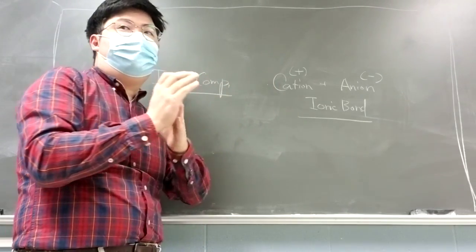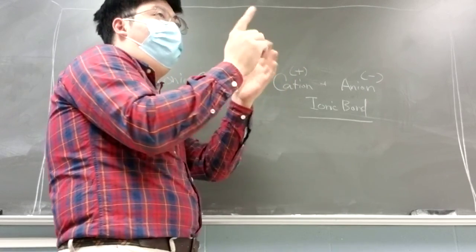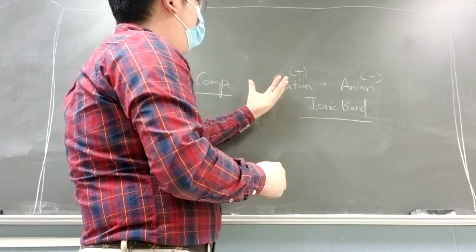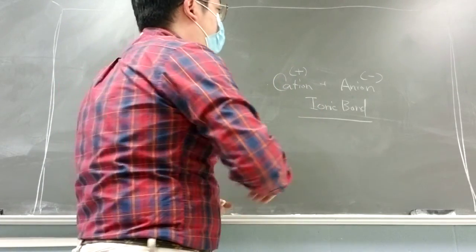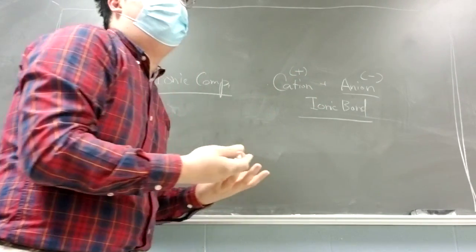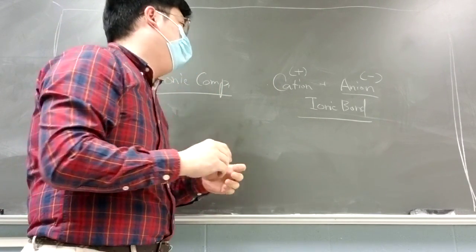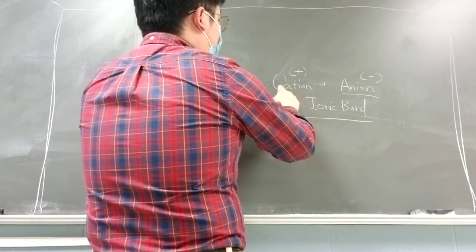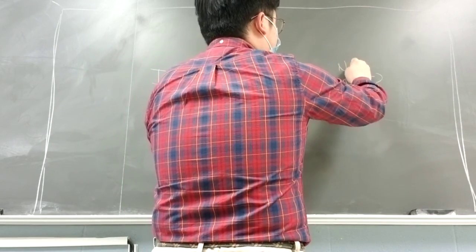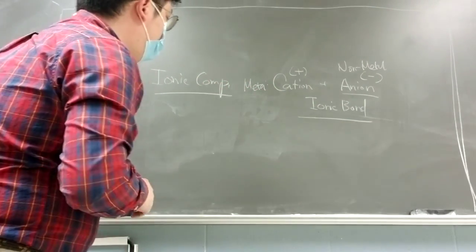We're going to cover this later this semester, but if you look at the periodic table, the elements on the left side will be the ones that become cations — normally they're all metals. The ones on the right side of the periodic table become anions with negative charge. So it's metal cation on the left, non-metal on the right — they're going to make ionic bonds.